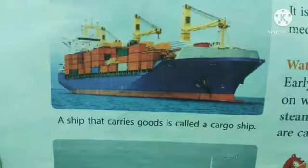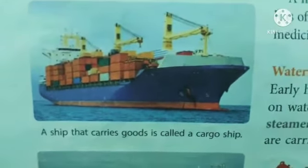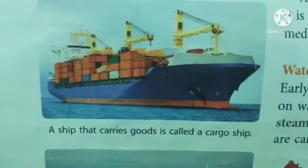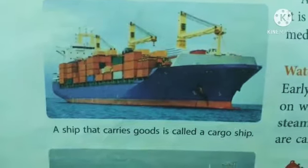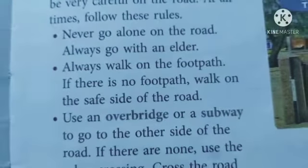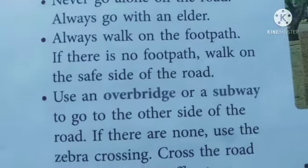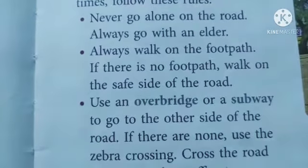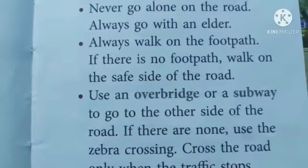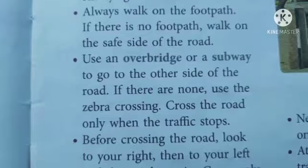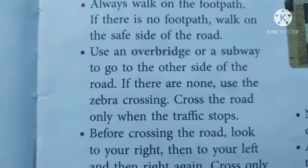For places that are nearby, we generally travel on foot. We must be very careful on the road at all times. Here are some road safety rules: never go alone on the road — always go with an elder. As small children, you cannot just go out alone. Always walk on the footpath; if there is no footpath, walk on the safe side of the road.